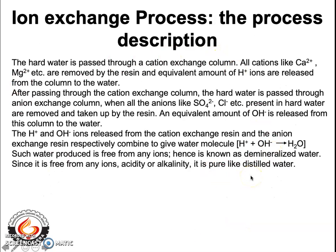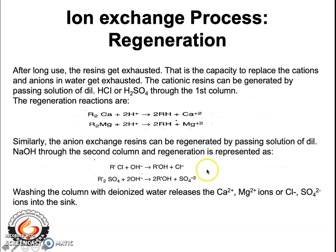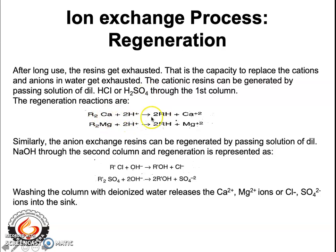Now let us come to the regeneration process. After long use, the resins get exhausted — meaning the resin loses the capacity to replace the cations and anions present in hard water. The cationic resins can be regenerated by passing a solution of dilute HCl or H₂SO₄ through the first column. The H⁺ ions present in HCl and H₂SO₄ get bound to the resins, and what comes out is calcium ions or magnesium ions. So the cationic exchange resin is now regenerated.